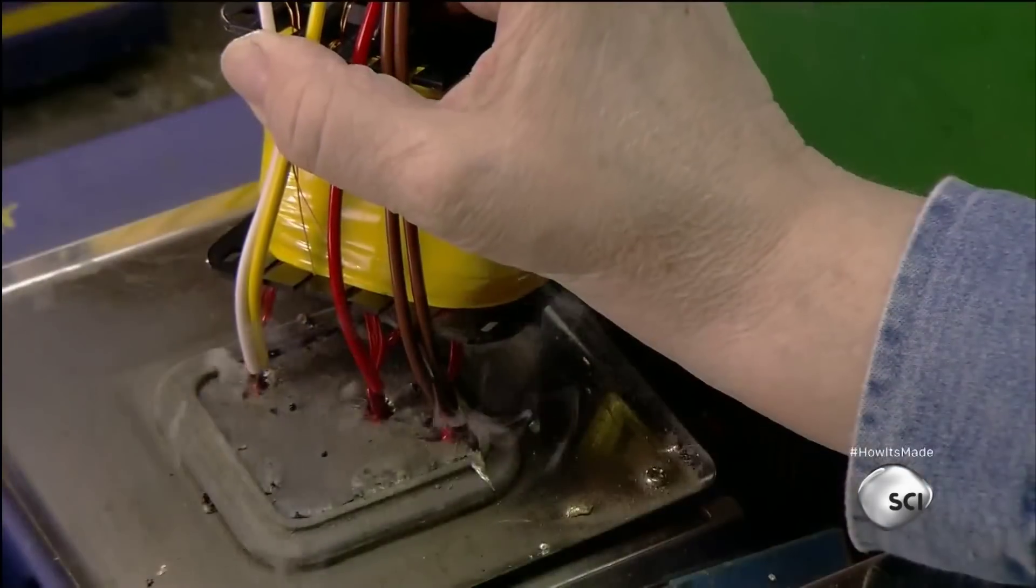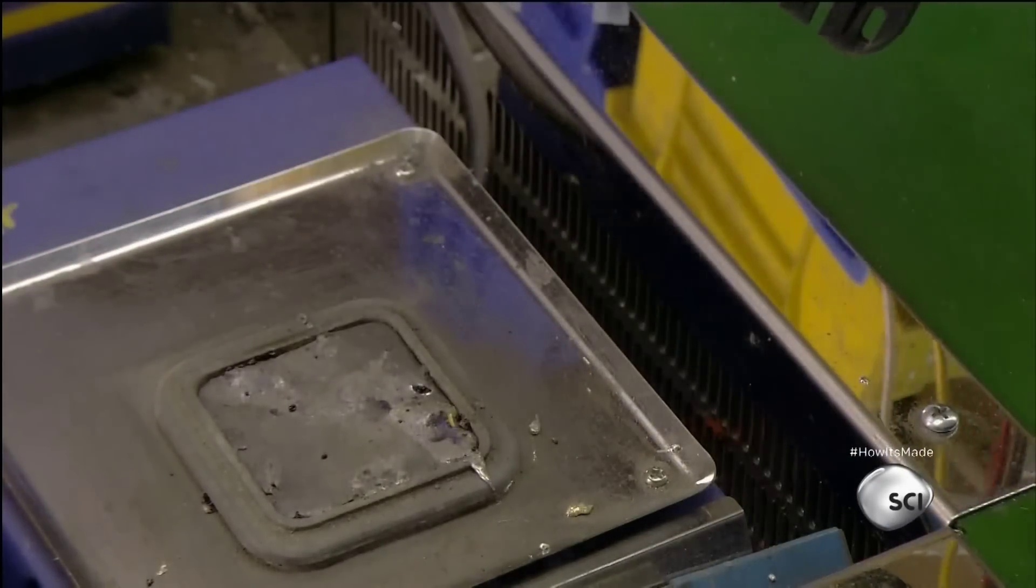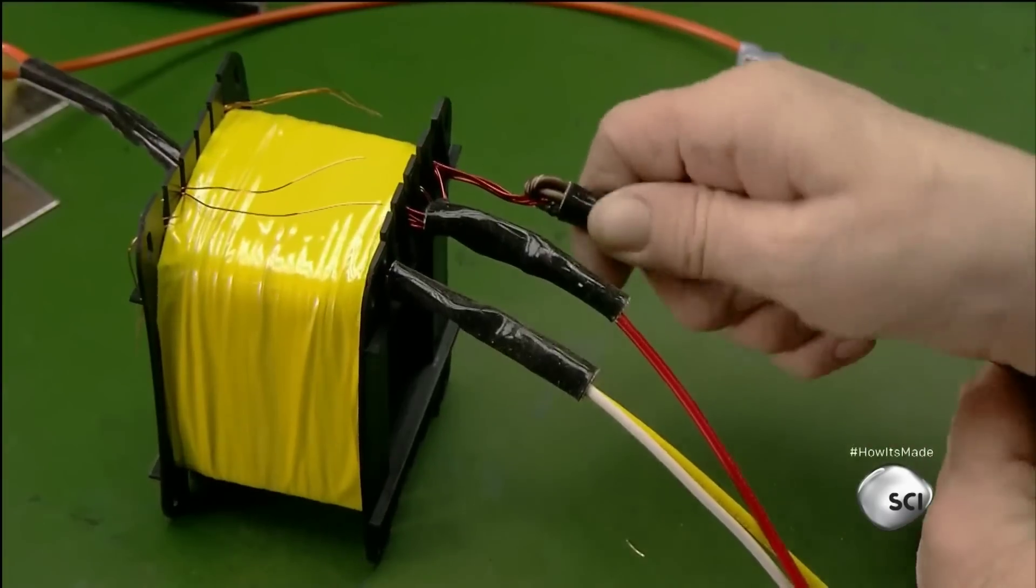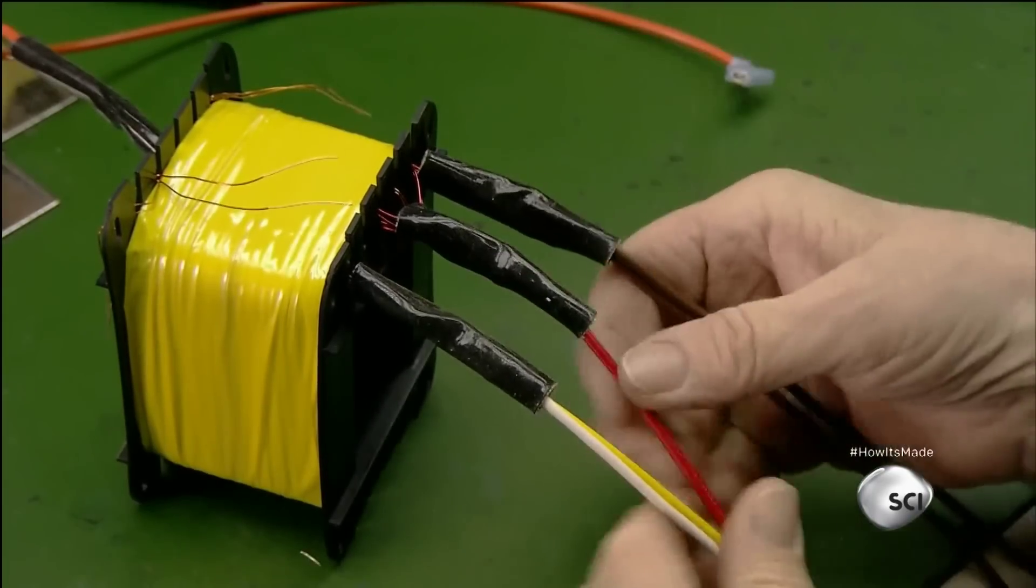After taping the wires to prevent unraveling, they join, then solder the ends to additional wiring. They will later connect to the amp's main board. A fiberglass sleeve insulates the connection.